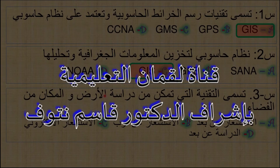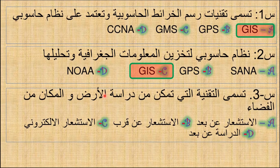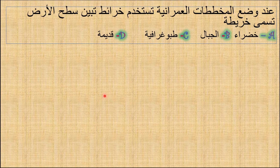الخيارات: الاستشعار عن بعد، الاستشعار عن قرب، الاستشعار الإلكتروني، الدراسة عن بعد - الجواب الصحيح: الاستشعار عن بعد. عند وضع المخططات العمرانية تُستخدم خرائط تبين سطح الأرض وتسمى خريطة - الخيارات: خريطة الجبال، خريطة طبغرافية، خريطة قديمة - الجواب الصحيح: طبغرافية.